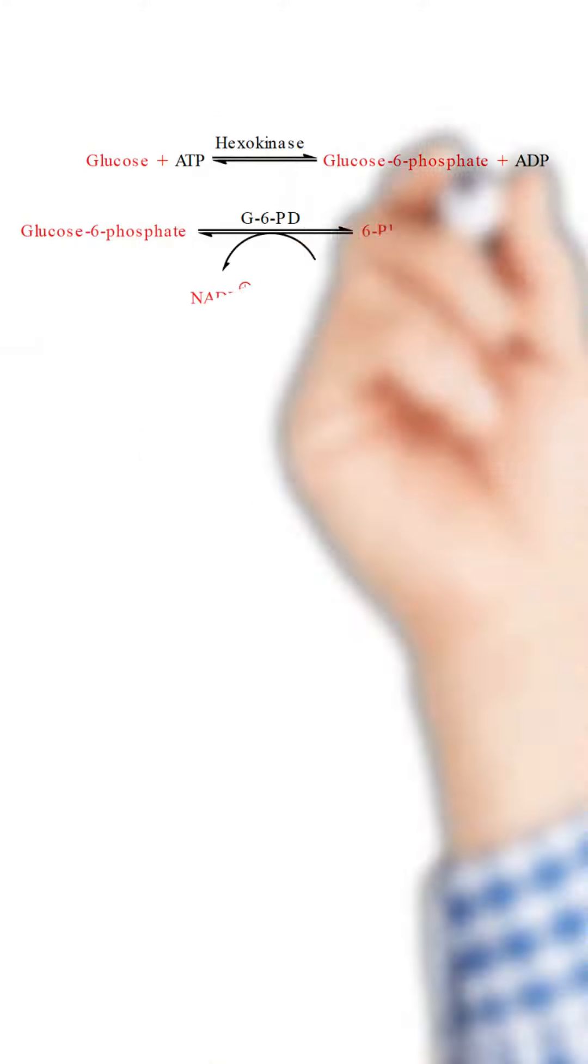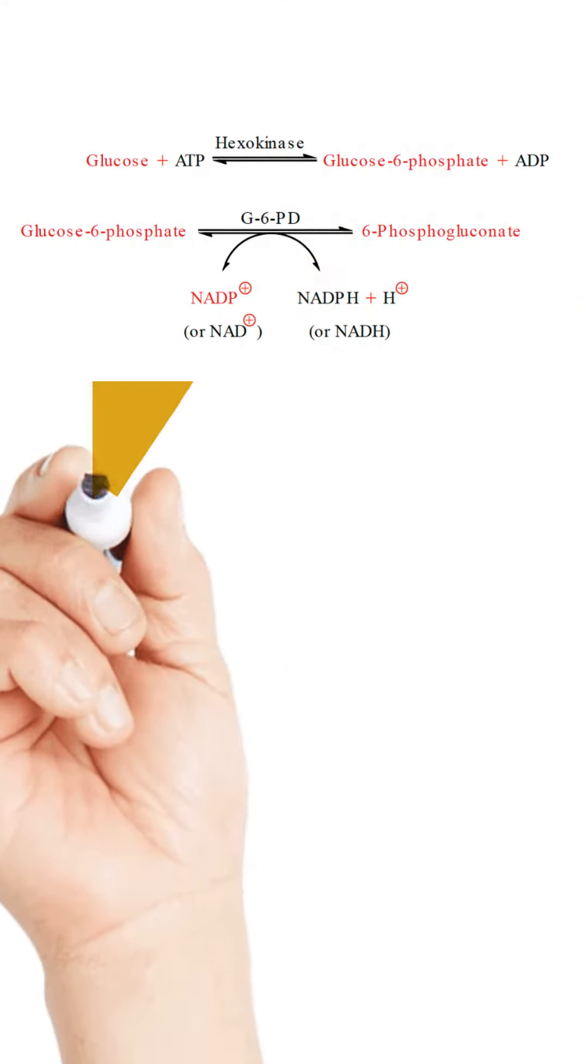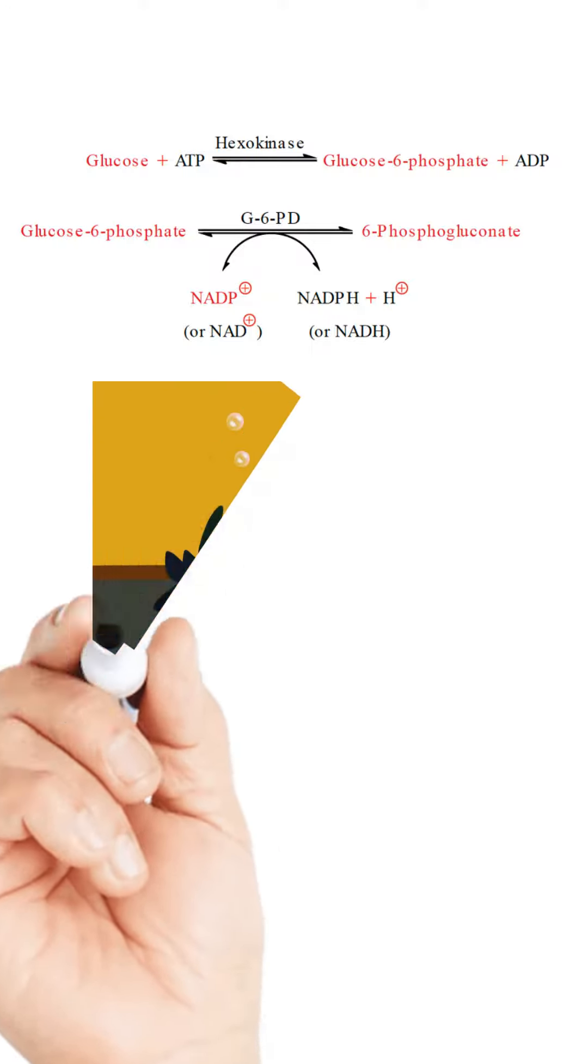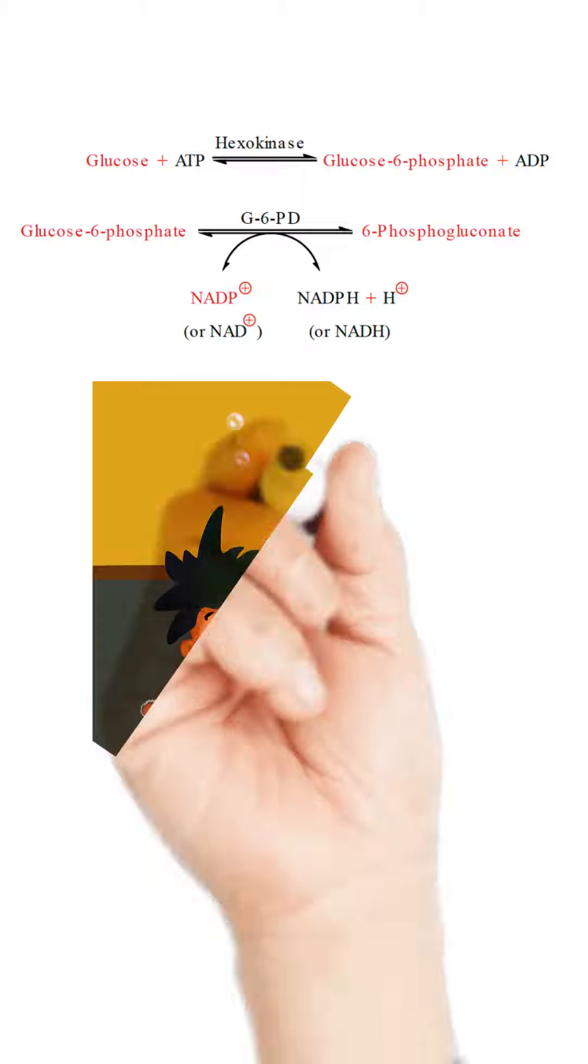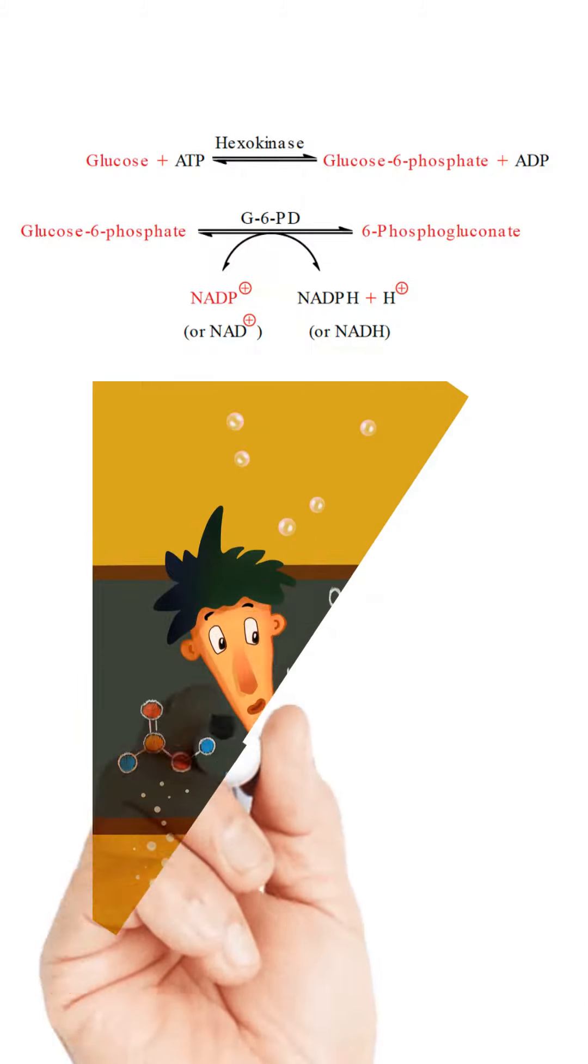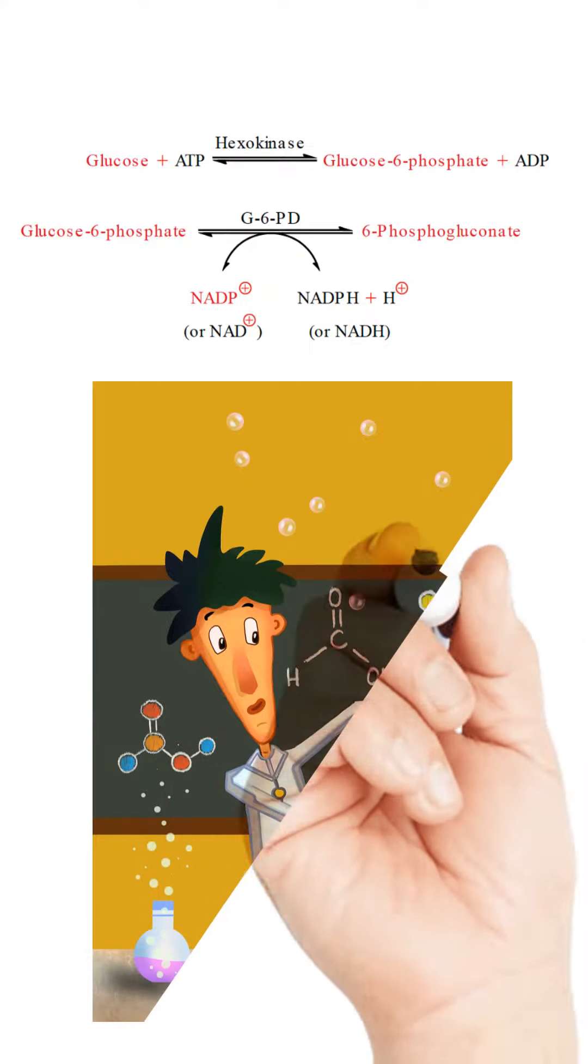It involves phosphorylation of glucose to glucose 6-phosphate by ATP in the presence of hexokinase and magnesium, which is then oxidized to 6-phosphogluconate by glucose 6-phosphate dehydrogenase in the presence of NADP plus or NAD plus.